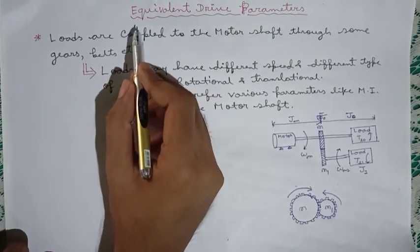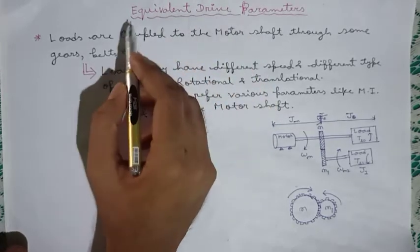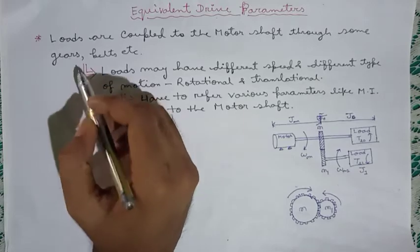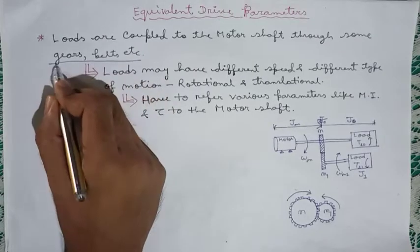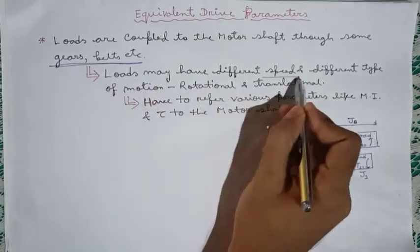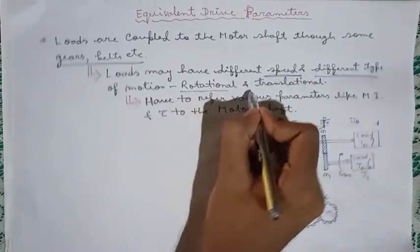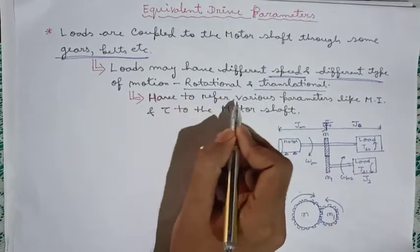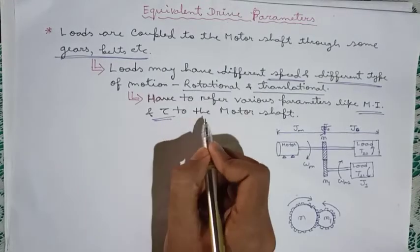In this video I am going to discuss the equivalent values of drive parameters. In my video on dynamics of electric drive, I explained that loads are coupled to the motor shaft through some gears, belts, etc. Because of this, loads may have different speeds and different types of motion such as rotational and translational. So we have to refer various parameters like moment of inertia and torque to the motor shaft.